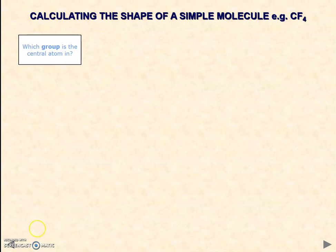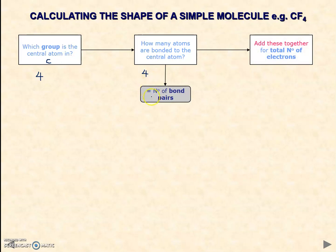Calculating the shape of a simple molecule: the first thing to do is say which group is the central atom in? If we're looking at the example of CF4, then carbon is in group 4. How many atoms are bonded to the central atom? The central atom is C, we've got four fluorines. So we've got four atoms bonded. The number of atoms bonded equates to our number of bond pairs.